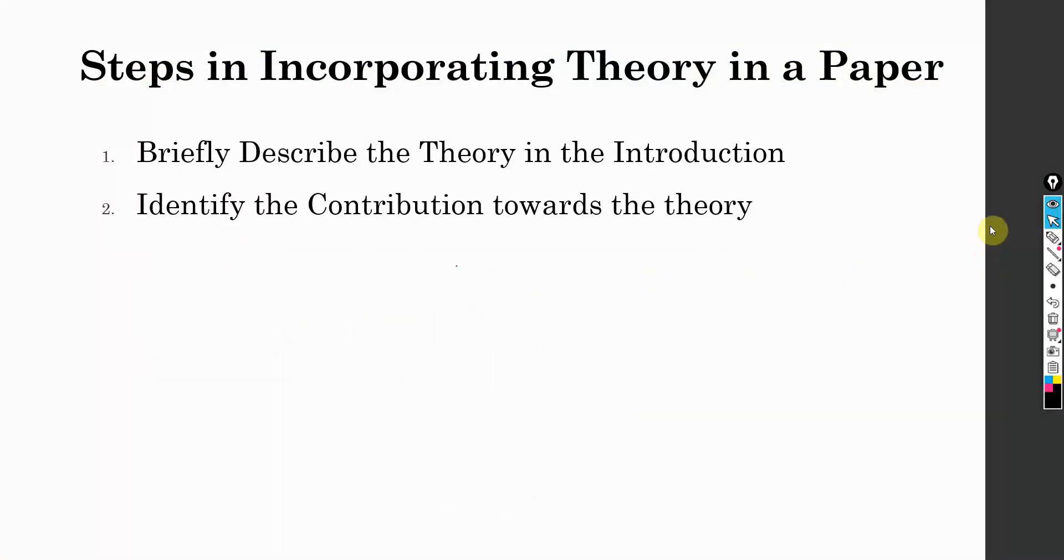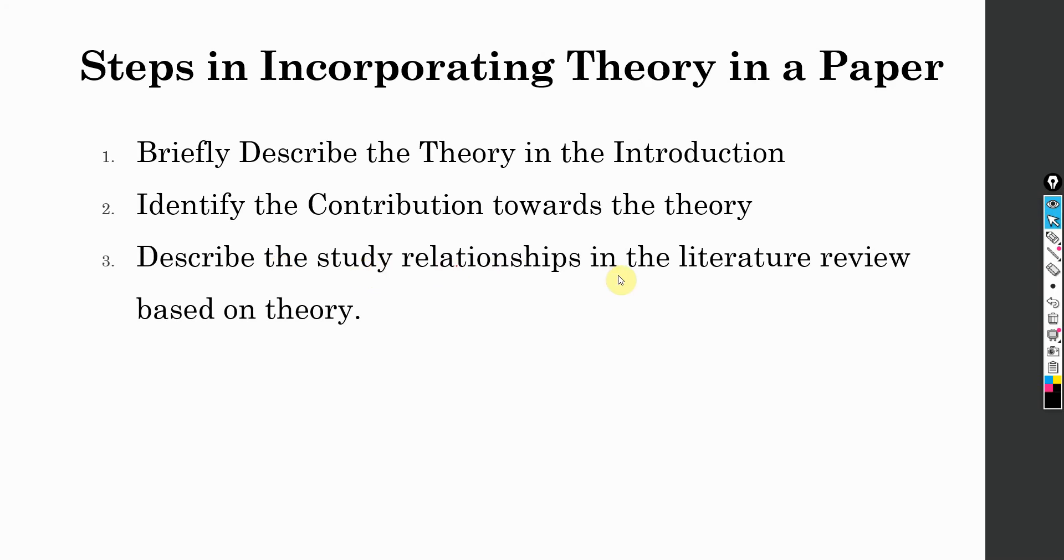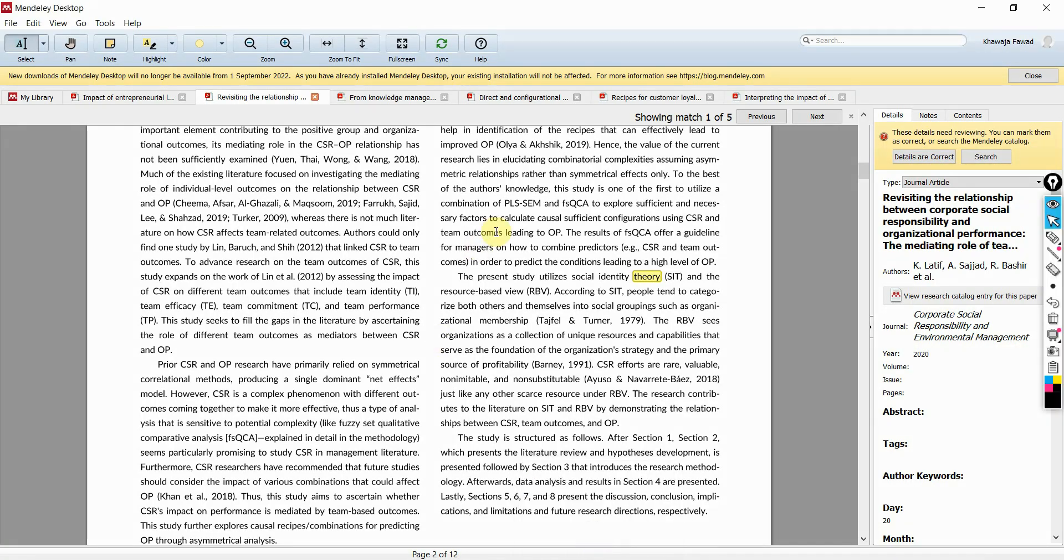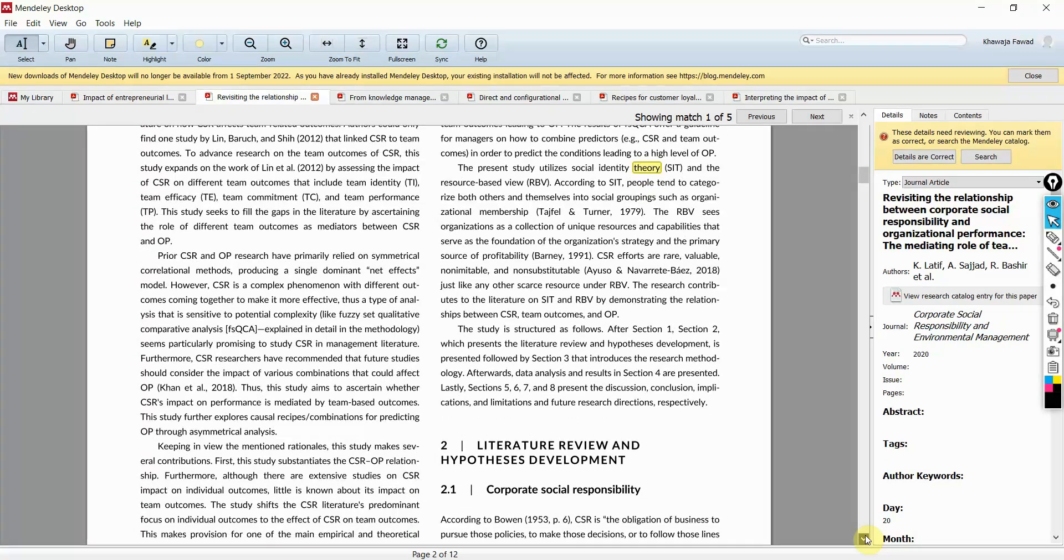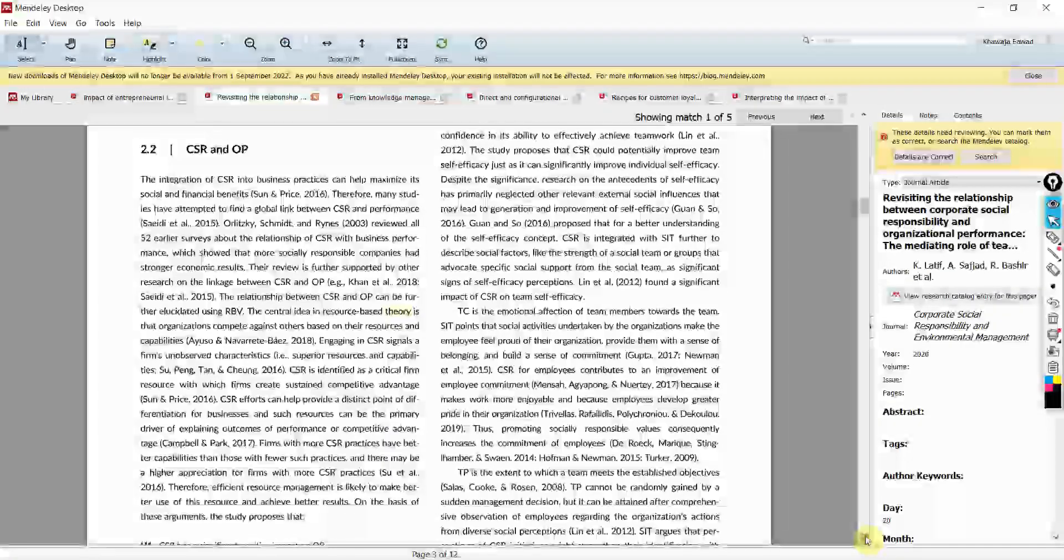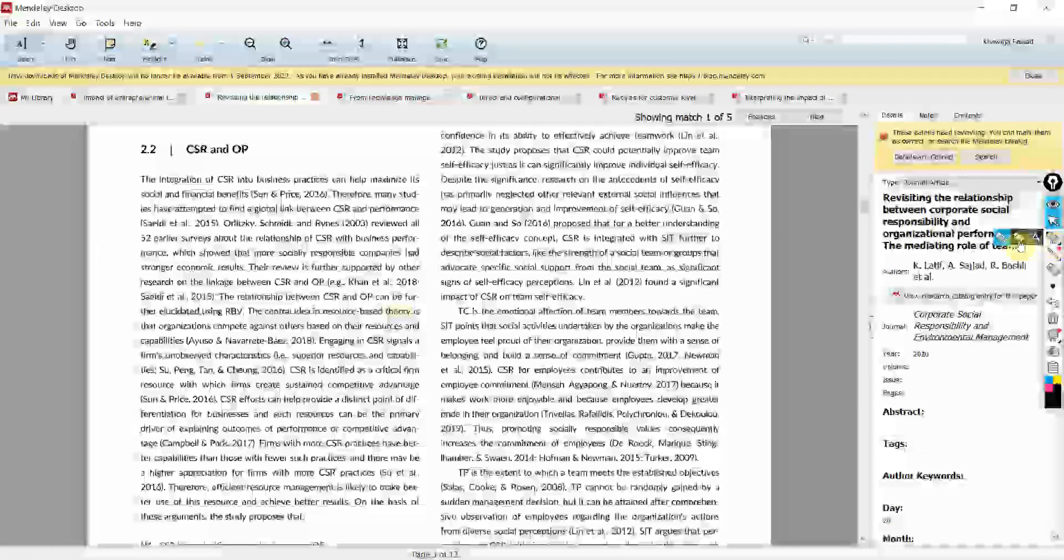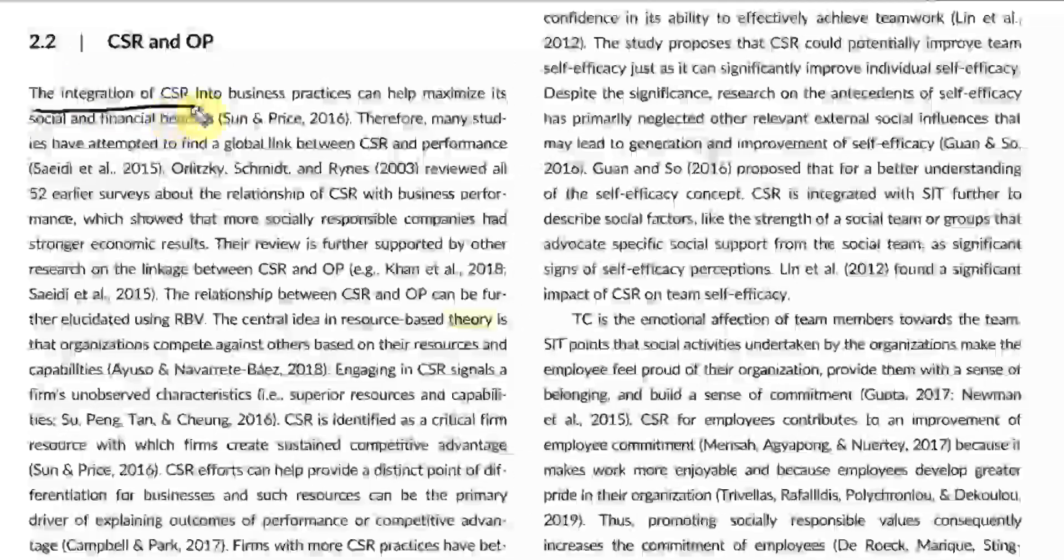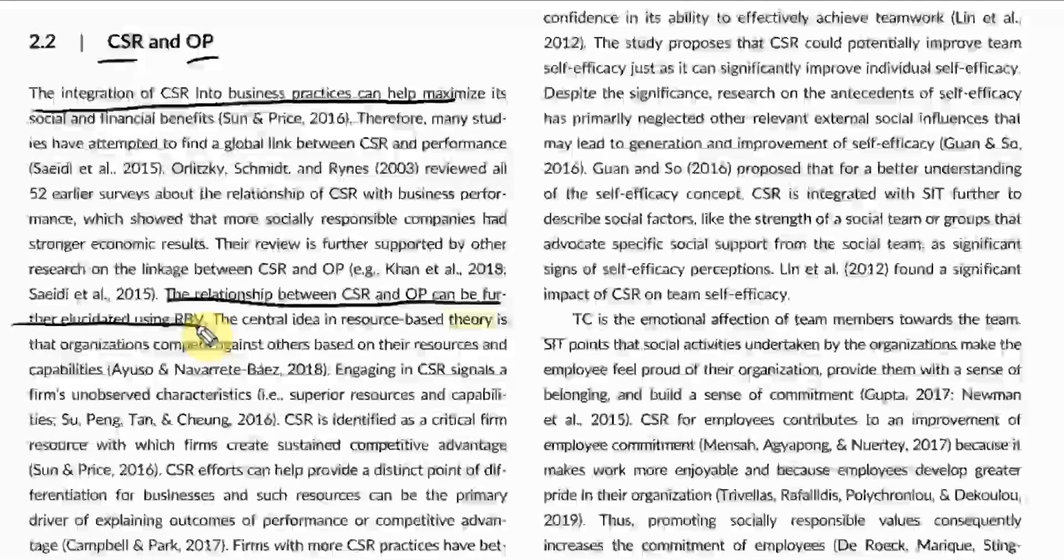Now, the next step: describe the study relationships in the literature review based on the theory. Now, theory will help you explain the relationships. Now, this explanation must be there or made part of your literature review. How? Have a look here. Literature review. And I am going to use this particular example here. CSR and OP. How CSR and OP? Have a look here. So, the integration of CSR in business practices can help. So, how is CSR linked to OP? All that, all reasoning done. Now, the relationship between CSR and OP can be further explained in light of RBV.